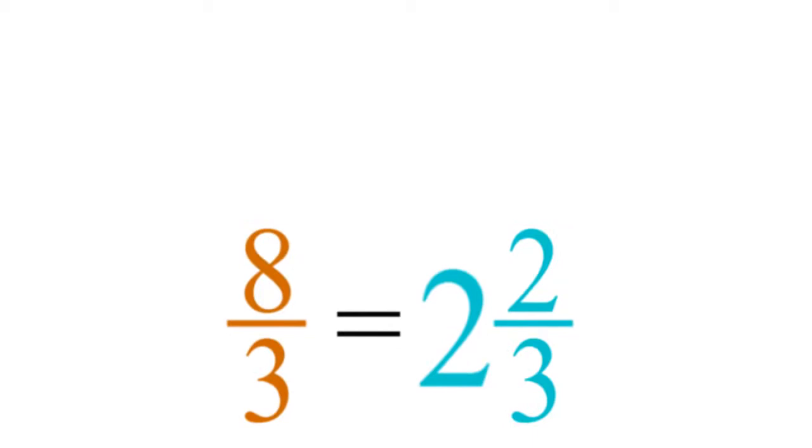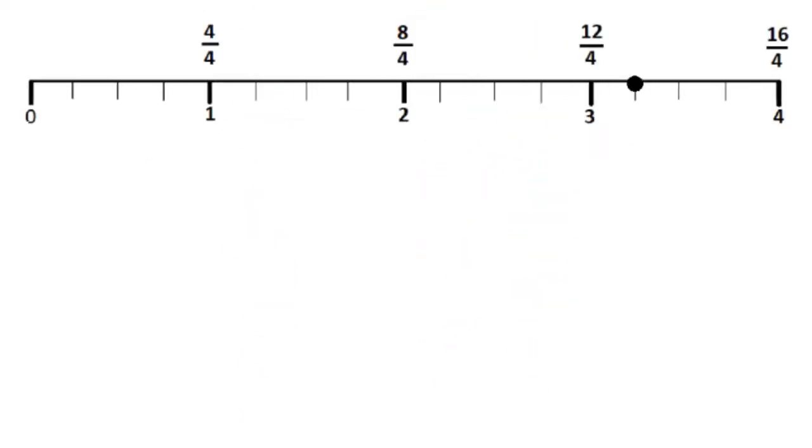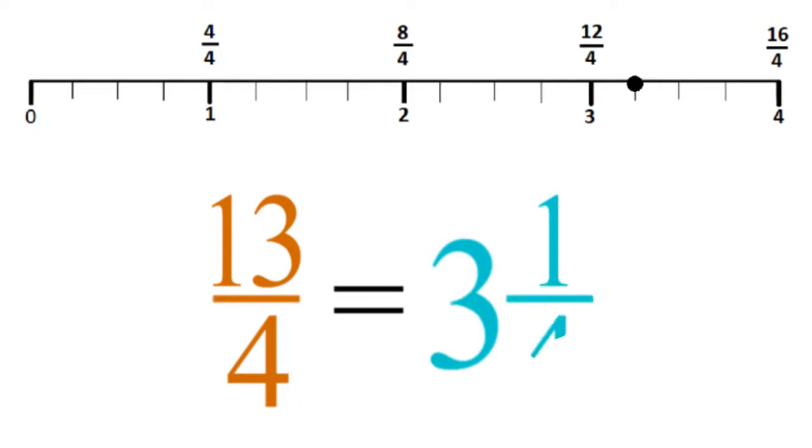For example, the shaded region shown here can be expressed as either the improper fraction 8 thirds or the mixed number 2 and 2 thirds. Similarly, this point on the number line can be represented as either the improper fraction 13 fourths or the mixed number 3 and 1 fourth.